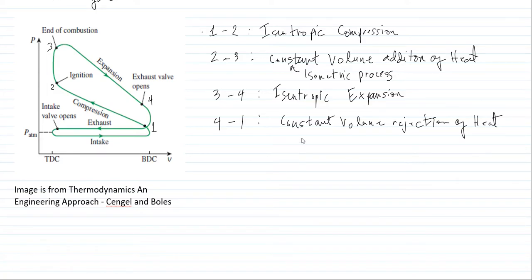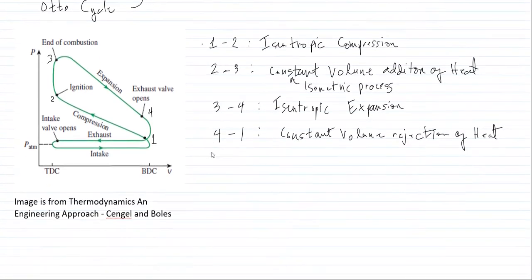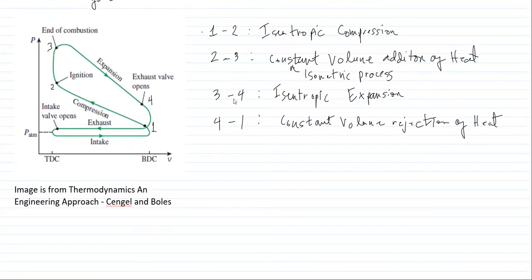As the gas goes from point 4 to point 1, it will be exhausted — the exhaust valve will open and the cycle will repeat itself.